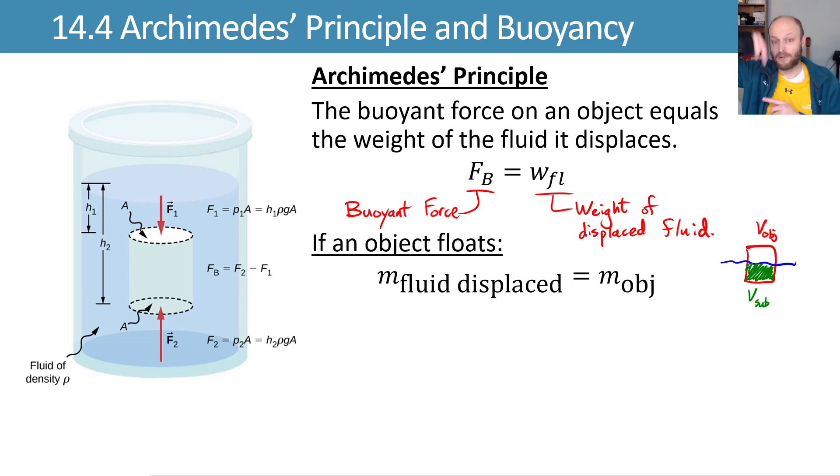That means that because the buoyant force is equal to the weight of the displaced fluid, the weight of the displaced fluid has to be the mass of the displaced fluid times gravity. So, mass of the displaced fluid times gravity equals mass of my object times gravity, or these masses have to be equal if our object is floating.